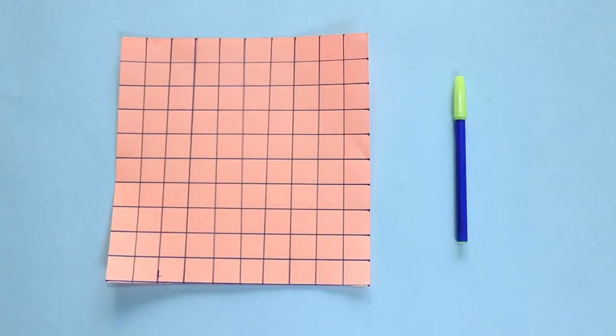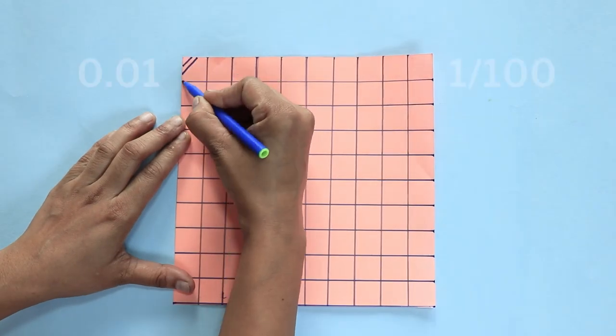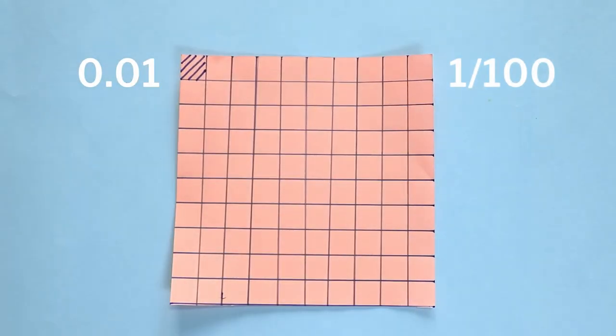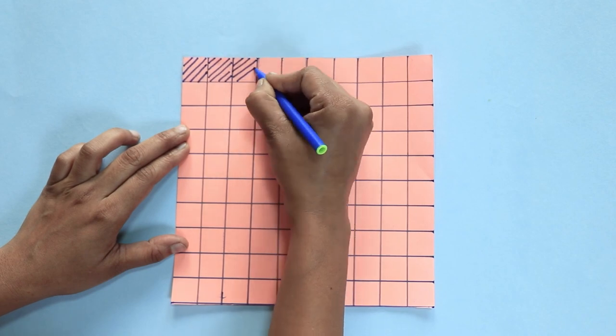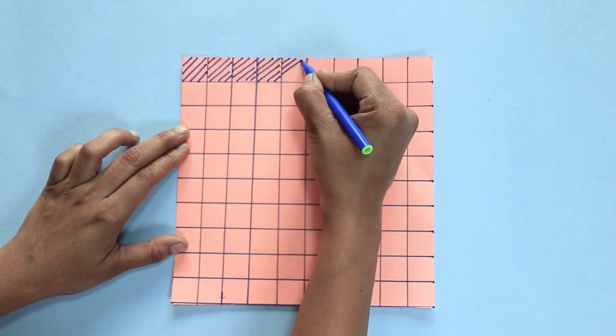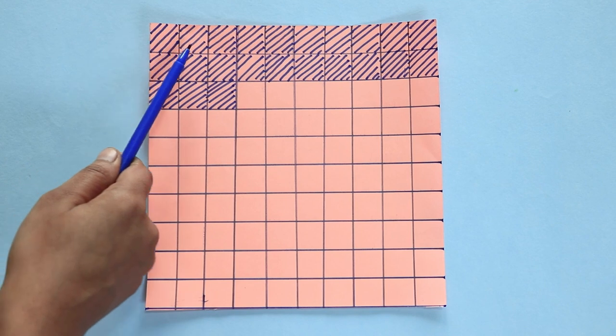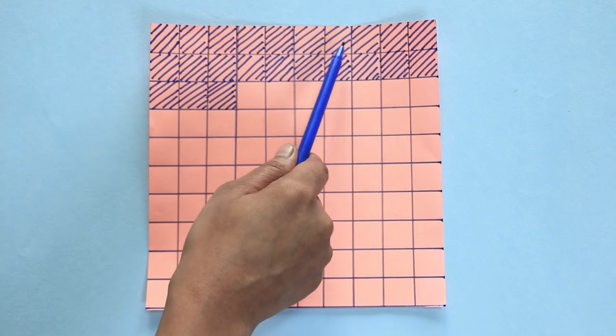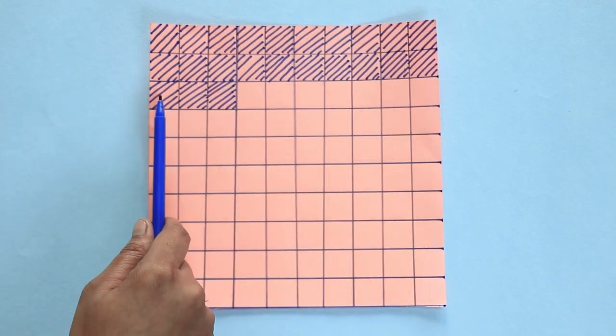In the next part of activity A, the students were asked to take origami sheets or square paper, make a grid, and divide it into 100 parts by marking 10 by 10 columns and rows. After the grid has been made, shade the area on the sheet that represents 0.01 part of the total area. Students were also asked to shade 23 boxes and explain its relation as 0.23 of the total area of the paper.